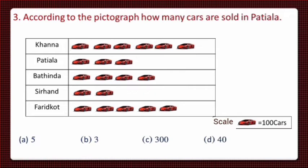This is a pictograph. It has two columns. In first column, the name of some cities is given. And in the second column, it shows the pictures of some cars. The scale is 1 car is equal to 100 cars. Let's count the number of cars sold in each city.